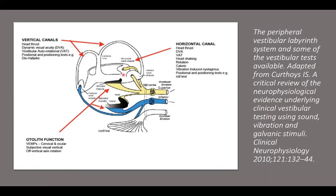To test the lateral canal, we have plenty of tests: video head impulses or head thrust, calorics, and rotary chair. We can also do lateral positioning tests. To test the vertical canals, we can do dynamic visual acuity, V-HIT, and positional tests like Dix-Hallpike. To test the utricle and saccule, we mainly use VEMPs — cVEMPs and oVEMPs. We can also do subjective visual vertical and skull vibration-induced nystagmus. We have plenty of tests to get information about how well these structures are functioning.